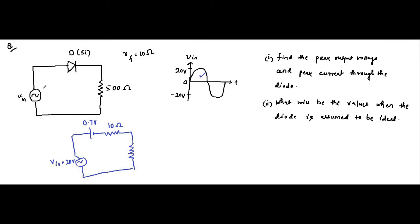During the positive half cycle, the positive terminal connects to the P end and the negative connects to the N end — the diode is forward biased. During the negative half cycle, the connections reverse: the diode is reverse biased and open circuited, so no current flows through the load. This is an example of a half-wave rectifier.